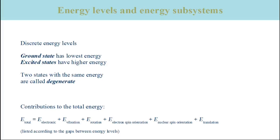Each of the subsystems contributes to the total energy, and this equation lists those contributions: the energy of the electrons in the orbitals, the energy due to the vibrations of the nuclei, the energy of molecular rotations, the energy due to the orientation of the spins of the electrons, the energy due to the orientation of the spins of the nuclei, and the energy due to the movement of the molecule in space.